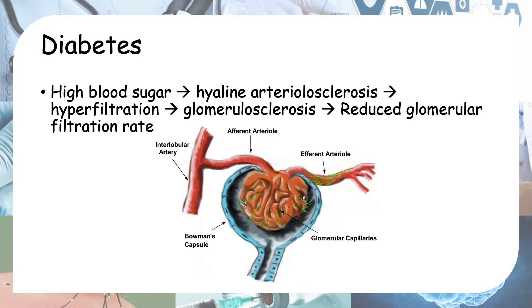As a result of this hyperfiltration, your glomerulus gets damaged, leading once again to glomerulosclerosis. The end result is the same as with hypertension: a reduced glomerular filtration rate. That sums up how diabetes and hypertension cause chronic kidney disease. Thank you for watching.